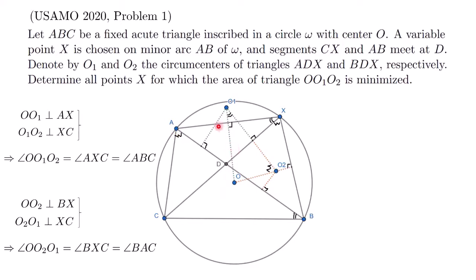So if you look at the diagram now, we realize that the triangle of interest to us, O, O1, O2, is actually similar to the fixed triangle CBA. What this means is that if we want to minimize the area of O, O1, O2, we actually have to minimize the length O1, O2 itself.